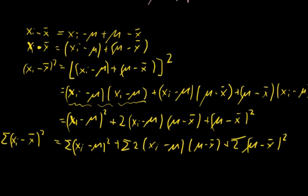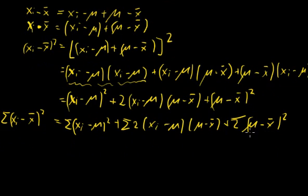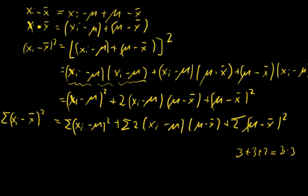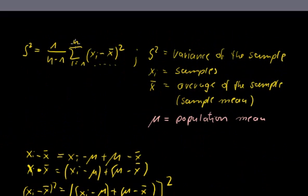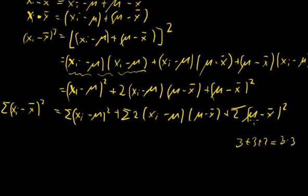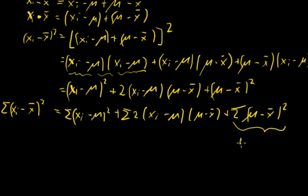Now we see this expression here is a constant — there is no x_i in it, so the whole expression is a constant. If you sum up a constant, for example 3 plus 3 plus 3, that equals 3 times 3. If you sum up to n, you sum it n times. So this expression, added n times, leads to n times (mu minus x-bar) squared.